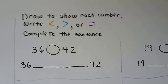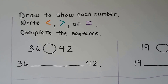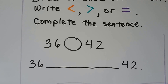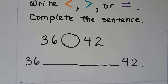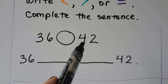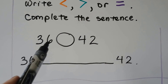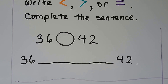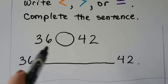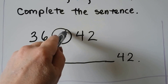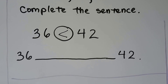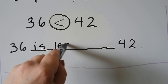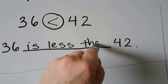We can draw to show each number and write less than, greater than, or equal to, and complete the sentence. We have 36 and 42. The first thing we do is compare the tens — we have three tens and we have four tens. Three is less than four, so 36 is less than 42. We can write 36 is less than 42.